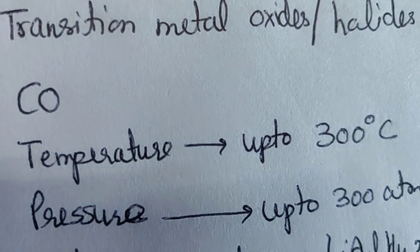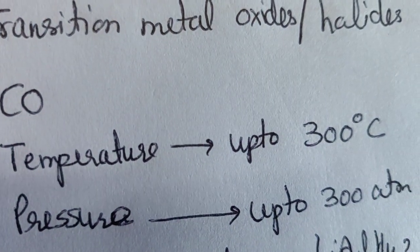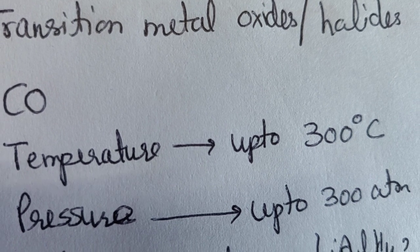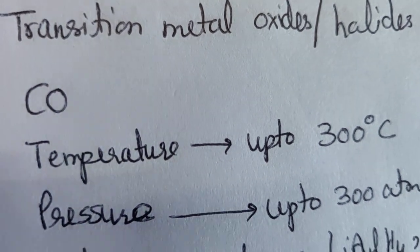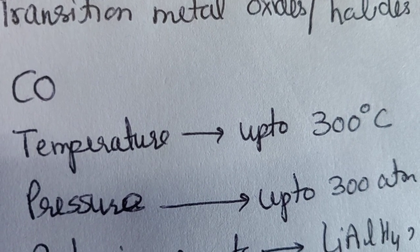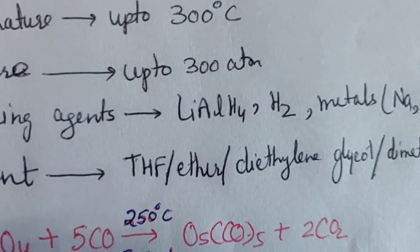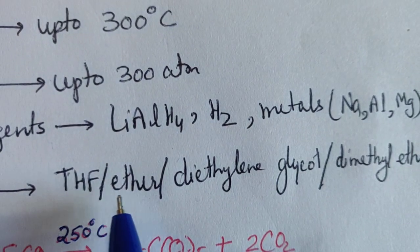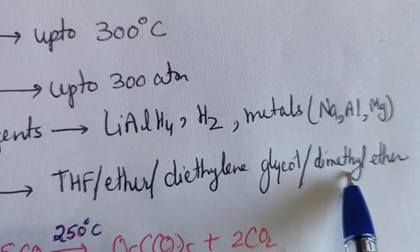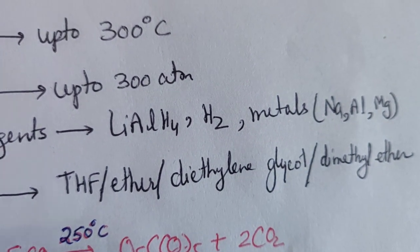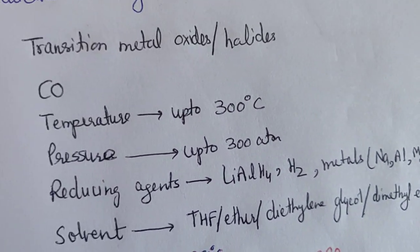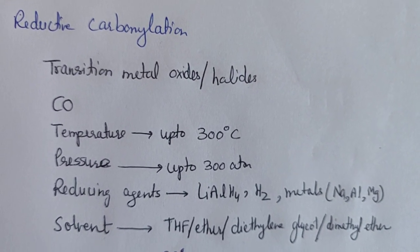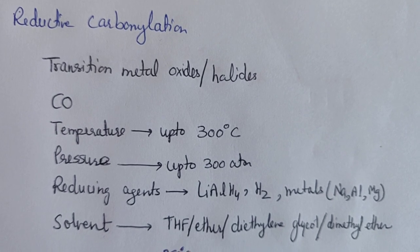Additional requirements for reductive carbonylation include temperature and pressure conditions — up to 300 degrees centigrade and pressure up to 380 atm. The reaction also requires an organic solvent medium, such as THF (tetrahydrofuran), ether, or diglyme (dimethylene glycol dimethyl ether).